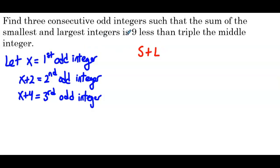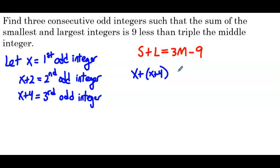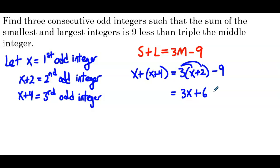The sum of the smallest and the largest: s plus l, is 9 less than triple the middle integer — so 3m minus 9. Substituting our let statement: the smallest odd integer is x, the largest is x plus 4, and the middle is x plus 2 (make sure that's in parentheses), minus 9. Now we solve — distribute the 3 to get 3x plus 6 minus 9 on the right side.